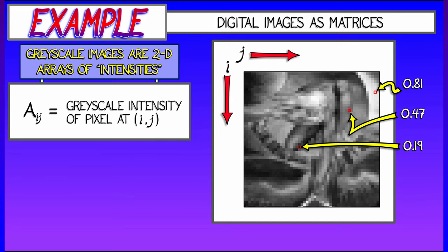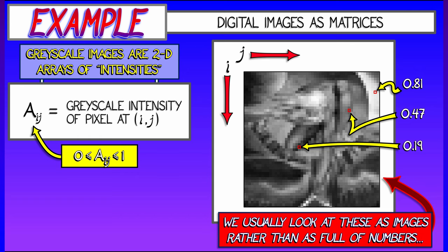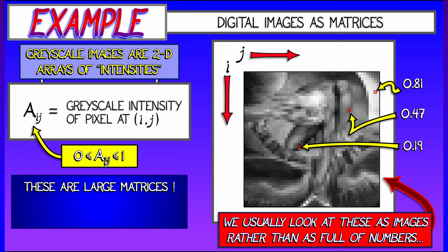In general, we'll say that a sub ij is giving you the grayscale intensity of the pixel at row i and column j. So all the entries of this matrix are going to be some numbers between 0 and 1 — 0 being dark, 1 being really light. Now, you're used to thinking of these as images, but they are really matrices full of numbers. That is how they are dealt with computationally.